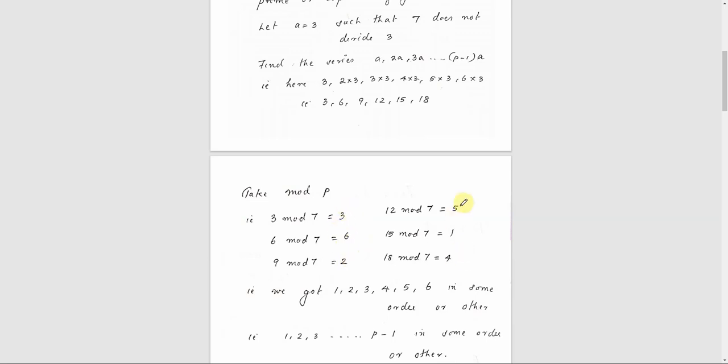So we got the remainders as 1, 2, 3, 4, 5, and 6. That is the same as 1, 2, 3, etc. up to P minus 1. We got the same numbers as 1, 2, 3, etc. up to P-1, in some order.